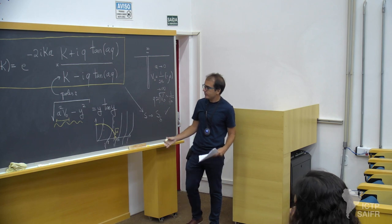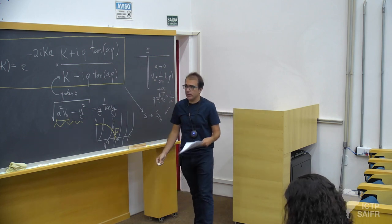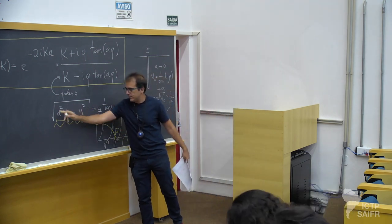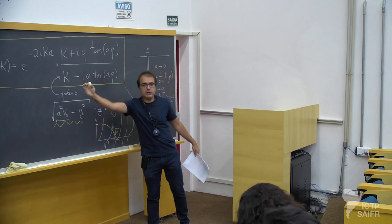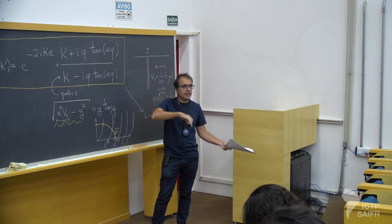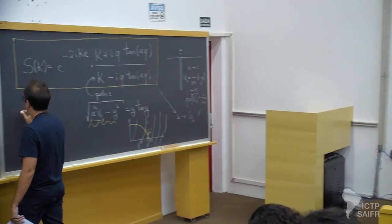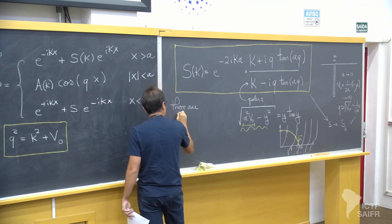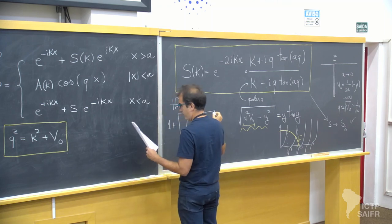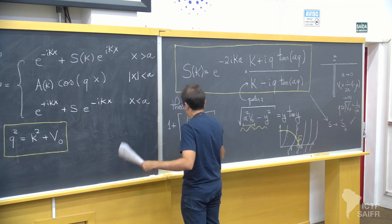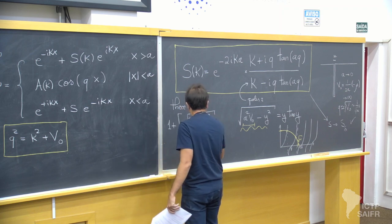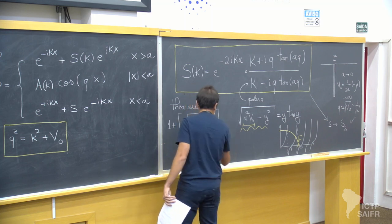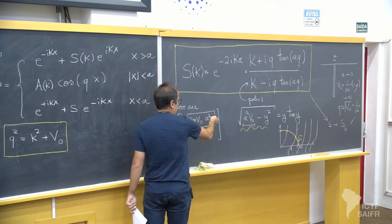Going back to Schrödinger equation with all the ħ's and m's, we can count how many bound states there are. The number is one plus the integer part of √(2mV₀a²/(π²ħ²)). This bracket stands for the integer part — so if this is 2.3 it's 2 bound states.